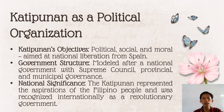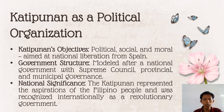The Katipunan's objectives were political, social, and moral — aimed at national liberation from Spain. Its government structure was modeled after a national government with a Supreme Council, as well as provincial and municipal governance. Nationally and internationally, the Katipunan represented the aspirations of the Filipino people and was recognized as a revolutionary government.